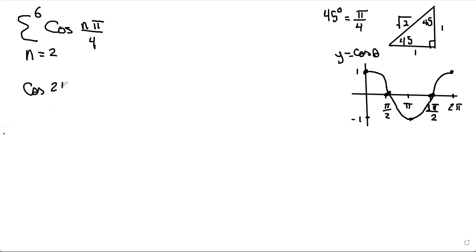So first thing, I'm going to write cos 2π over 4, substituting 2 for n, then plus cos 3π over 4 plus cos 4π over 4 plus cos 5π over 4 plus cos 6π over 4. So we did all the way from 2 to 6.